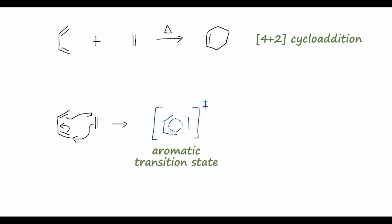This is what is called an aromatic transition state. Just know that this six-membered ring configuration with six delocalized pi electrons is incredibly stable, and so this transition state collapses to the cyclohexene product. For this reaction, we formed two new carbon-carbon bonds as well as a carbon-carbon double bond.